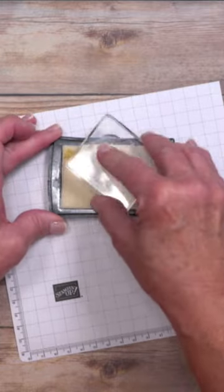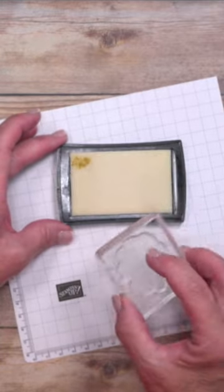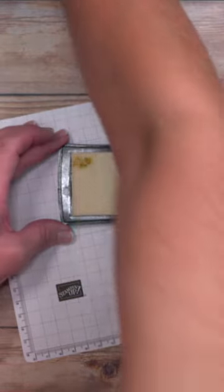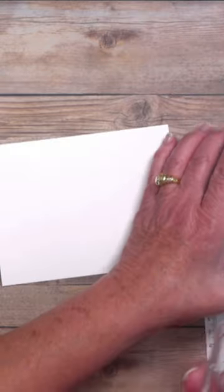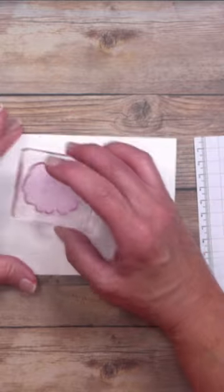Ink up the stamp, stamp off on scratch paper a couple times, then make sure you have something to clean it nearby. Once it's clean, grab your favorite color, ink it up, and stamp.